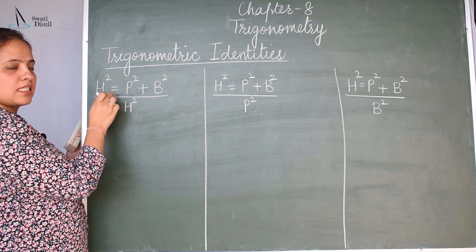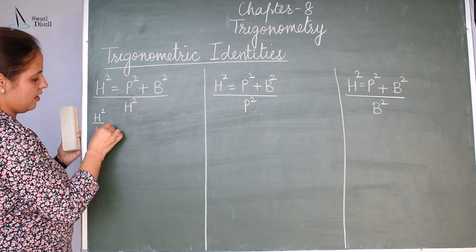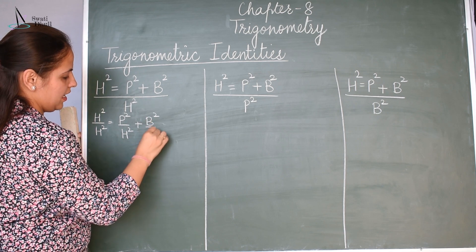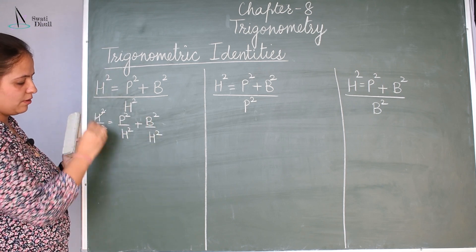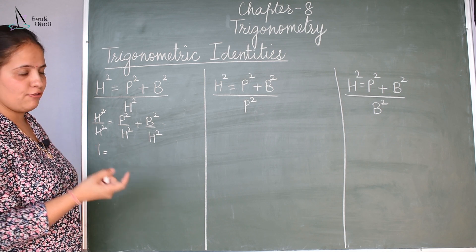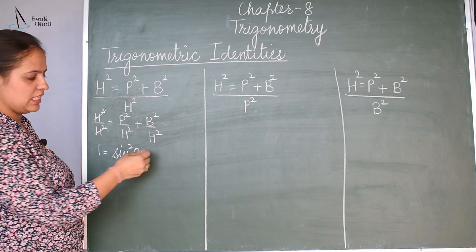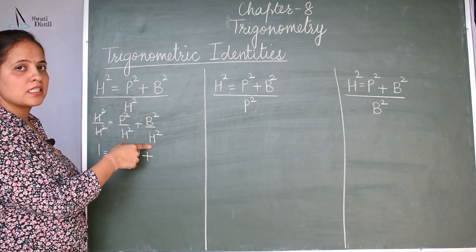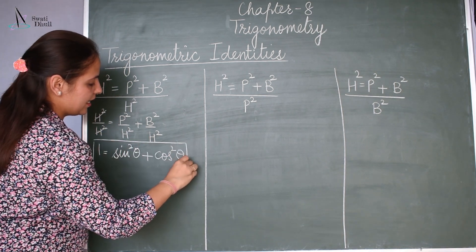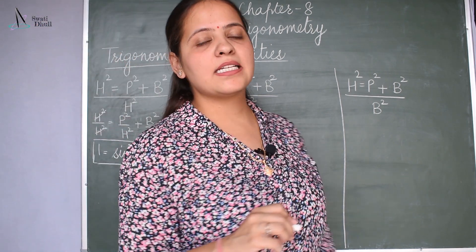This whole equation is divided by H square, that means H square by H square is equal to P square by H square plus B square by H square. If it cancels, 1 is equal to P by H — which is the sine function — so this becomes sine square theta, plus B by H, which is cosine. So it will become cos square theta. This is your first identity: sine square theta plus cos square theta is equal to 1.